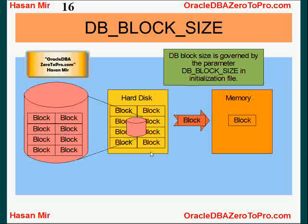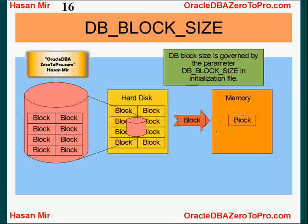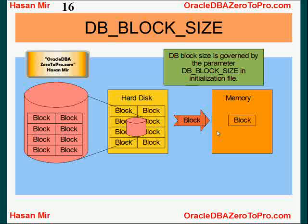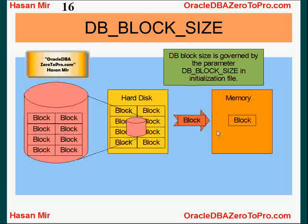The database block size is defined in the initialization parameter file. This file tells the instance when it starts up in memory what the environment variables will be — it is only read at the time the database wakes up and controls the behavior of the database. For your information, you can have a setup where one tablespace uses one DB block size and another tablespace uses a different DB block size — up to four different DB block sizes are supported. The whole purpose of this tutorial was to give you the concept of OS block size and database block size and the relationship between the two. I'll see you in the next tutorial.